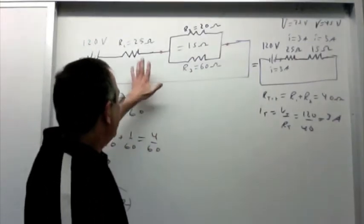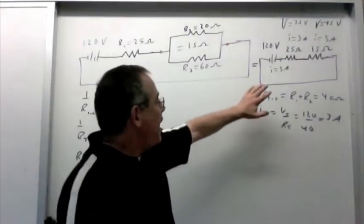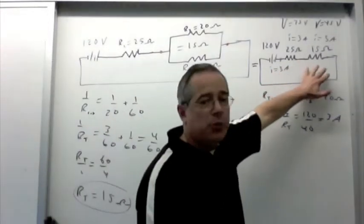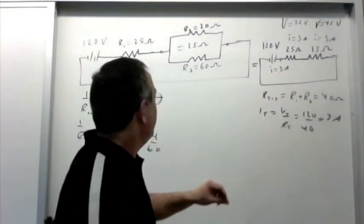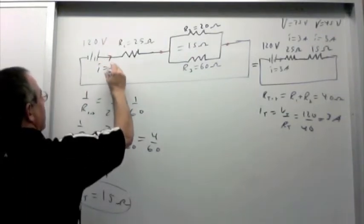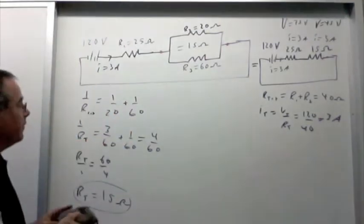Now let's transfer that back to this one. All right, the 25 ohm, everything we found for this is true for this. We have to worry about what's going on between the red dots, but everything else is the same. So if we got 3 amps here, we get 3 amps here. 3 amps are coming out of this battery.